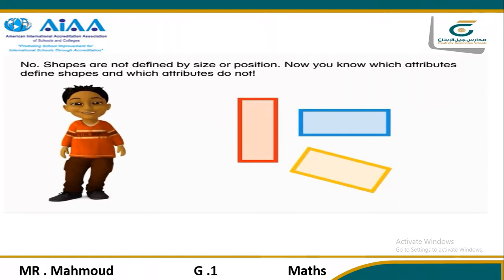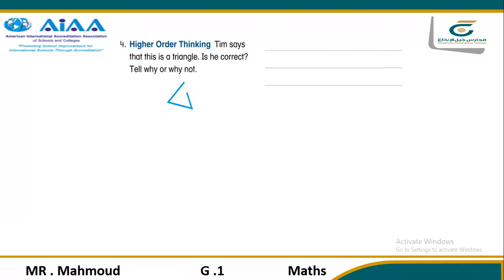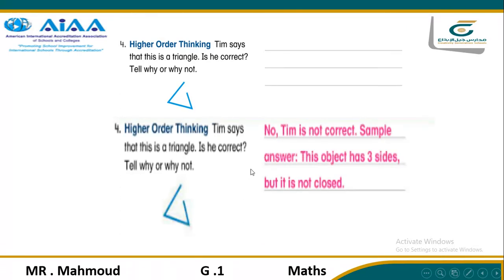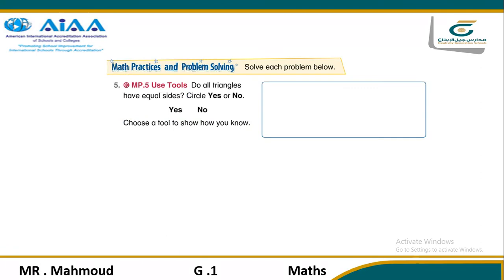Now you know which attributes define shapes and which do not. Someone says this shape is a triangle — is that correct? Is it a triangle? No, that is not a triangle. Why? Because the object has three sides but it is not closed — it is not a closed shape, so it is not a triangle. It has three sides but is not closed, so it's not a triangle.